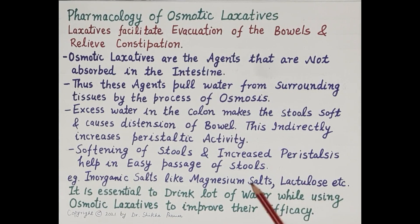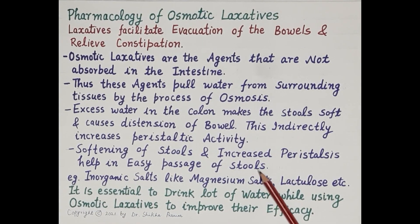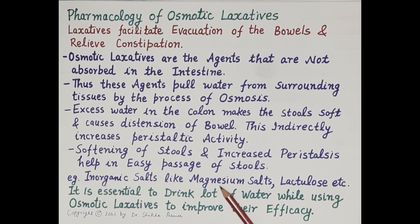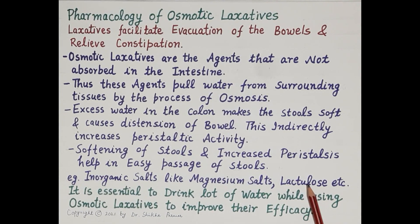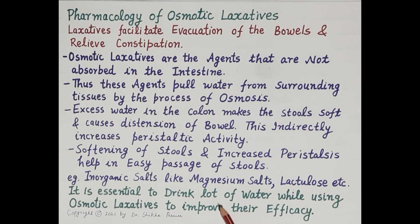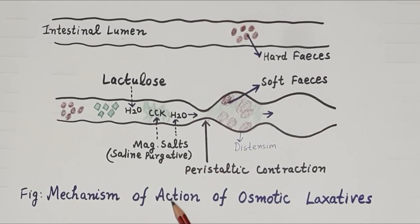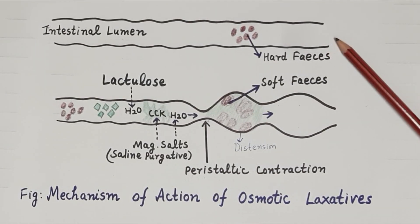Examples of osmotic laxatives are magnesium and inorganic salts like magnesium salts and sodium salts, and agents like lactulose, polyethylene glycol, and glycerin. Since osmotic laxatives pull water from the surrounding tissues into the colon, it is essential to drink lots of water while using them in order to improve their efficacy.